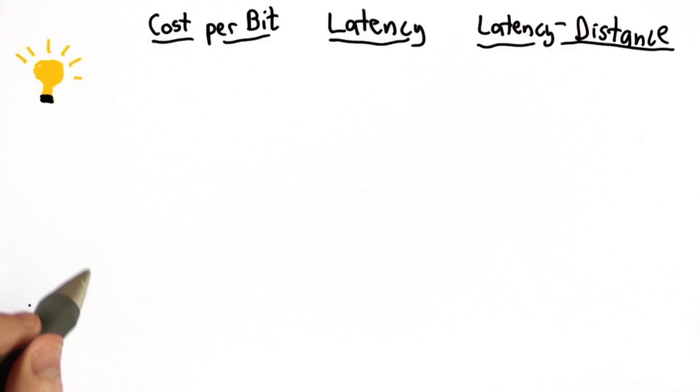Units like nanoseconds are fairly hard to understand. So what I want to do to give a better understanding of what the different types of memory in a computer are is turn those into different units and compare them.